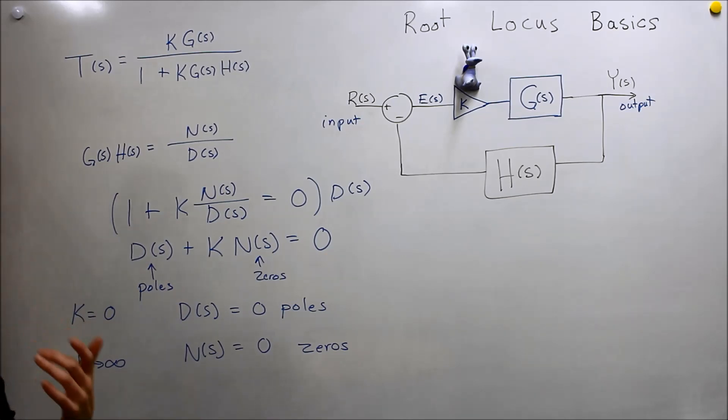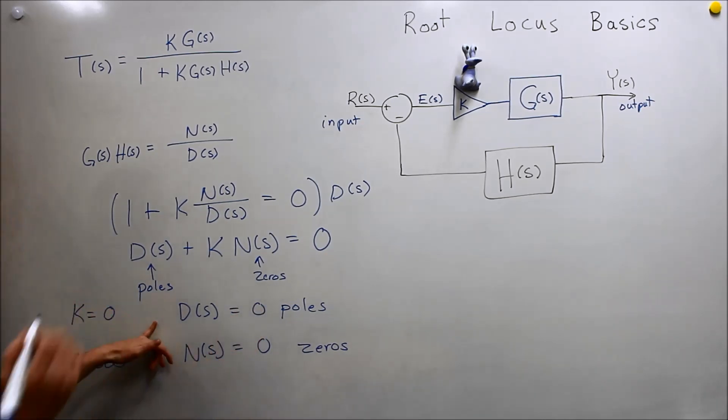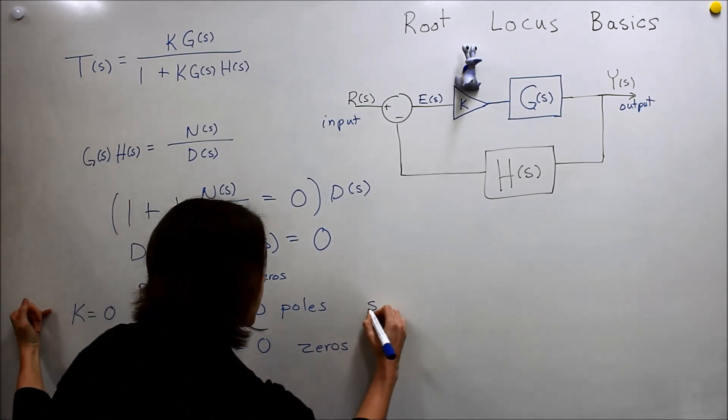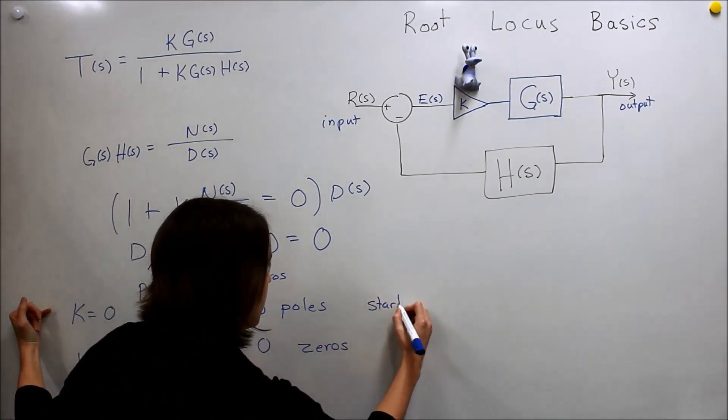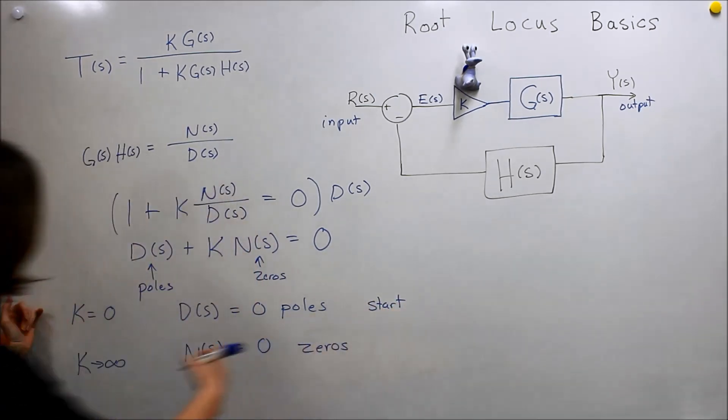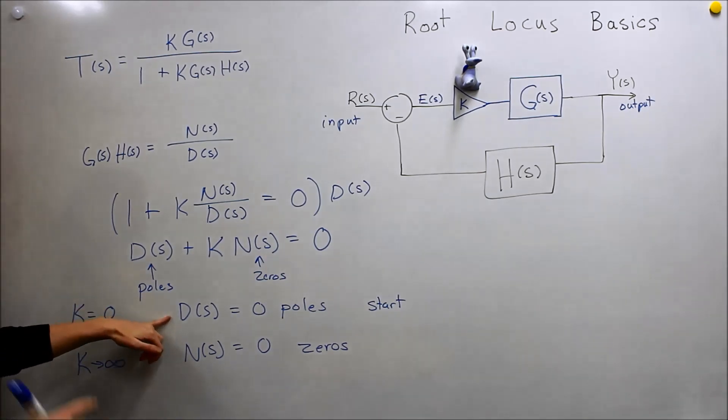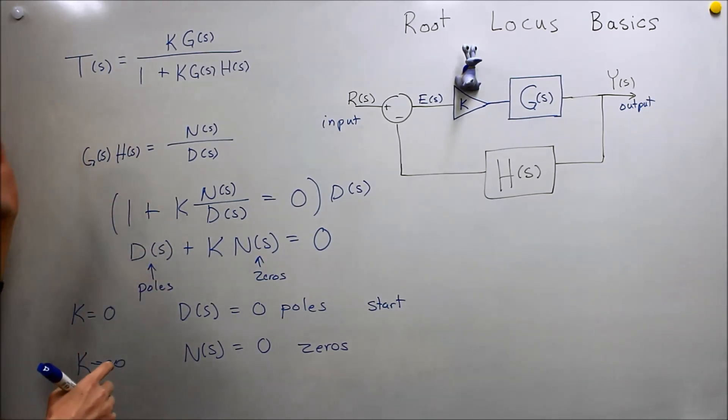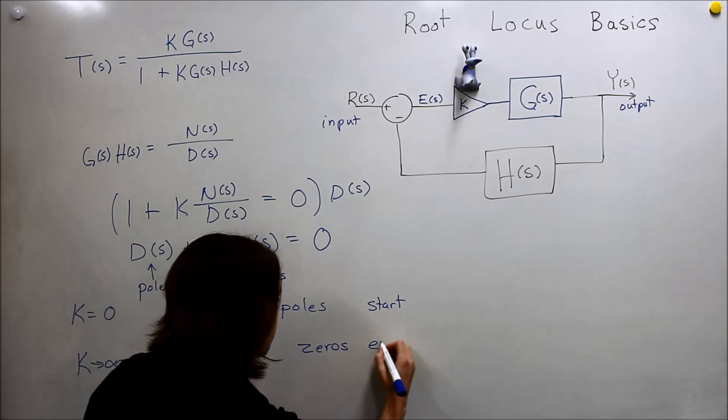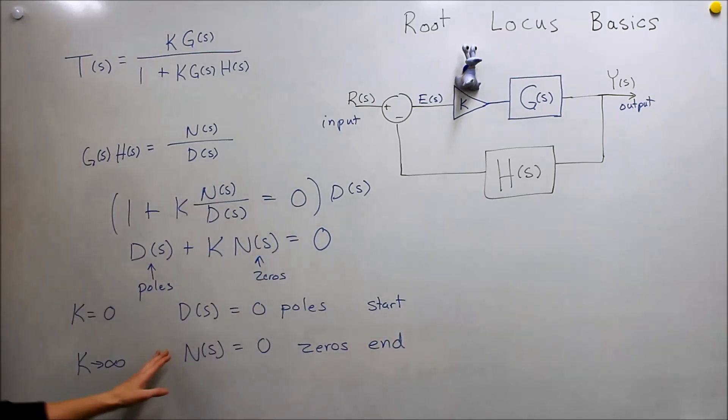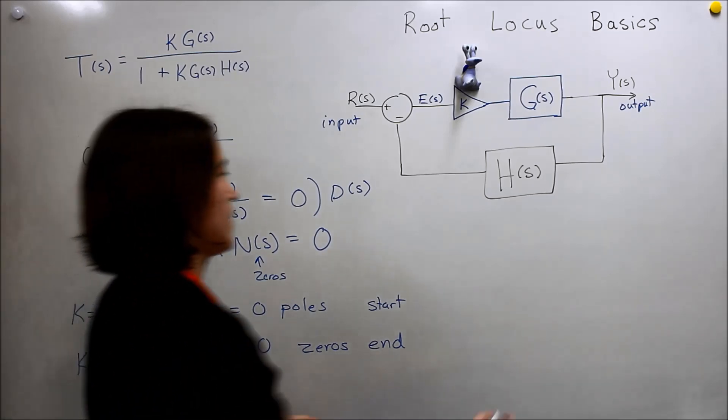So we're going to use those as our starting point. When K equals zero, we're going to start from this point, from the poles of our GH, and we're going to end, because we're going to take K from zero all the way to infinity, and we're going to end at the zeros of the system. So we're going to draw that on our S map.